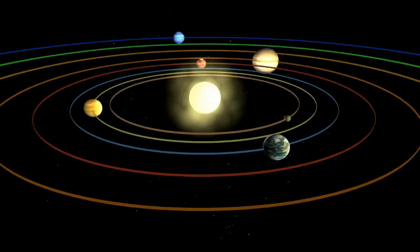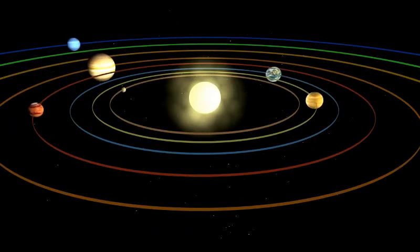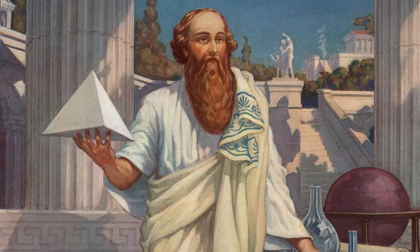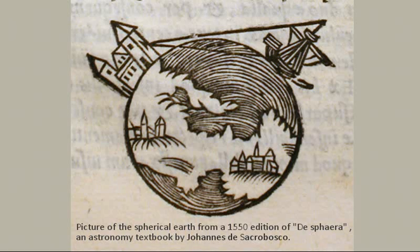The nature of the Earth, solar system, and stars took many centuries to figure out. The Greek mathematician Pythagoras was the first to propose that the Earth was a sphere in the 6th century BCE, but it wasn't accepted by most of the world until the Middle Ages between the 5th and 15th centuries.